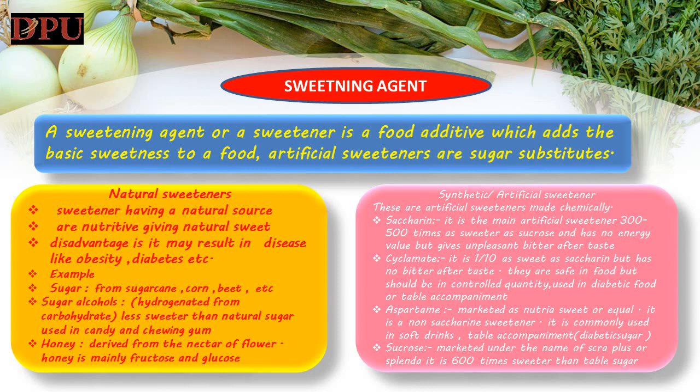Sweetening agents: a sweetening agent or sweetener is a food additive which adds the basic sweetness to a food. Artificial sweeteners are sugar substitutes. They are classified into two types. First type is natural sweeteners. As the name specifies, these are sweeteners having a natural source and are nutritive, giving natural sweetness, but a disadvantage is they may result in diseases like obesity, diabetes etc. Examples: Sugar — derived from sugarcane, corn, beet etc.; it is widely used.